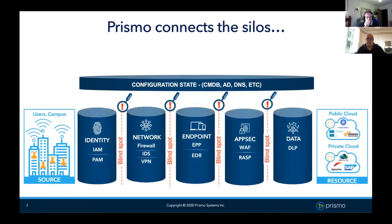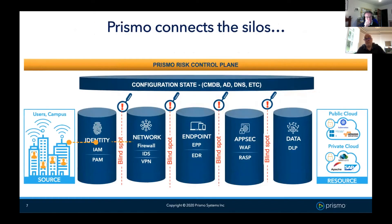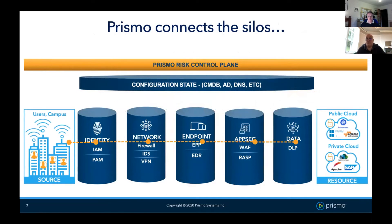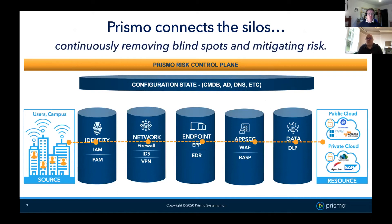Prismo has built a platform that enables a risk control plane end-to-end across the enterprise. Rather than looking at individual pieces of information, we get a single view of the truth from end to end — which user, using which device, where they are, has access to which resource, and what they've done in real time across the enterprise. We record every action, and we can then combine that with the configuration state to see where the blind spots are.